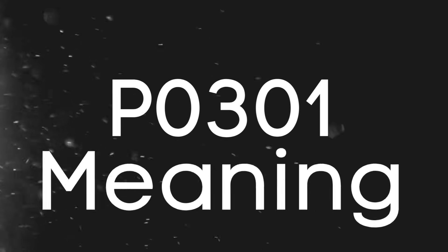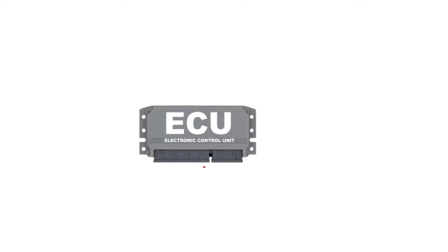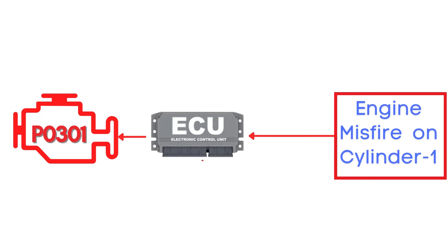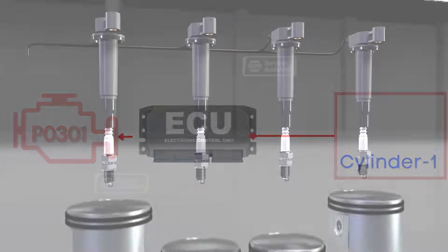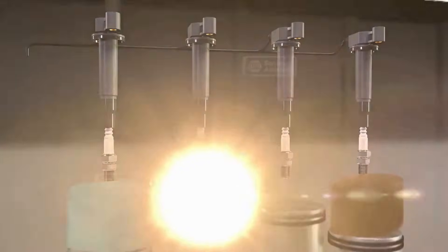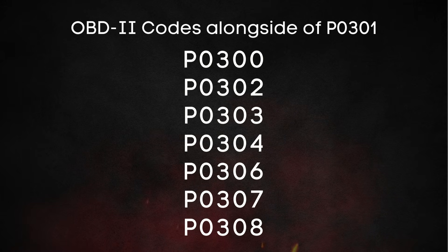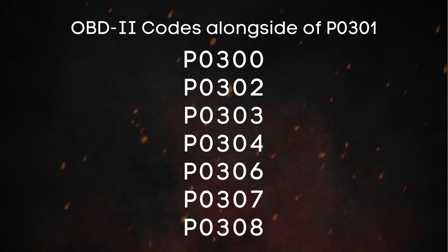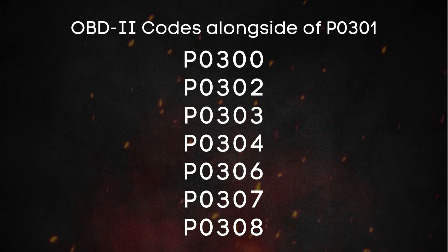Let's break down what the P0301 code actually is. This code gets triggered when the Engine Control Module, or ECM, detects an engine misfire on Cylinder 1. A misfire means that the combustion process inside one or more cylinders isn't happening properly. You may also find another OBD-II code, like P0302 to P0308, alongside P0300.